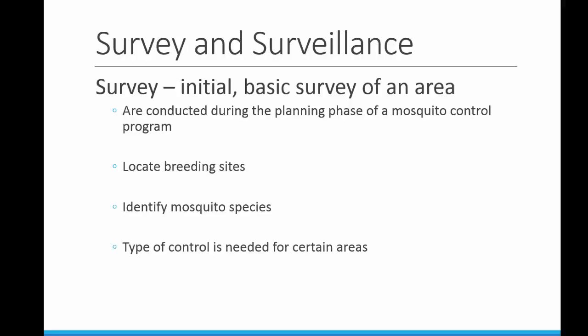Surveys and surveillance are a little different. A survey is a one-time, initial, basic survey of an area. They're usually conducted during the planning phase of a mosquito control program. They help you, again, to locate breeding sites, identify mosquito species, and then decide what type of control is needed or appropriate for certain areas.